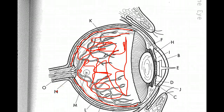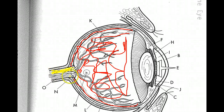Switching over to yellow for the optic nerve. The optic nerve is this bundle of nerve fibers right here in the back. Remember, the optic nerve is the reason that you have a blind spot in each eye — you can't see where the optic nerve connects into your brain.